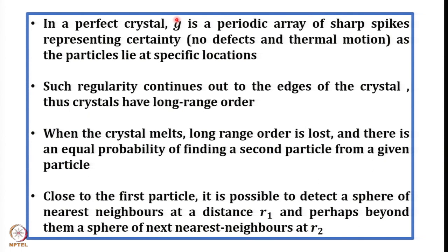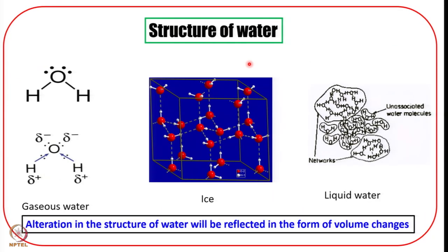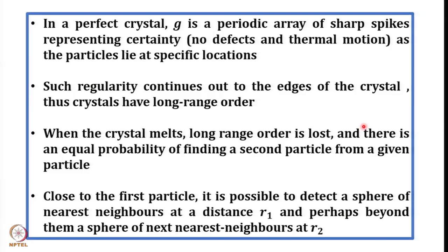The radial distribution function shows sharp spikes because the particles lie at specific locations. To help you understand this, go back to the structure of ice — in the solid form, these locations in 3D structure are fixed. Whereas when you talk about the gaseous state they are not fixed, they are very mobile. In the liquid state also there is a fast exchange between monomeric and tetrahedral structure of water. Such kind of regularity continues out to the edges of the crystal — thus crystals have long range order. When we talk about unit cells, those units are repeated and form the whole solid structure.